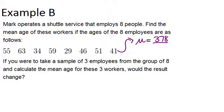Then divide by 8 because there are 8 employees, and you get 47.25. And this is the population mean. So it's the mean for all 8 employees. It includes all 8 of them.